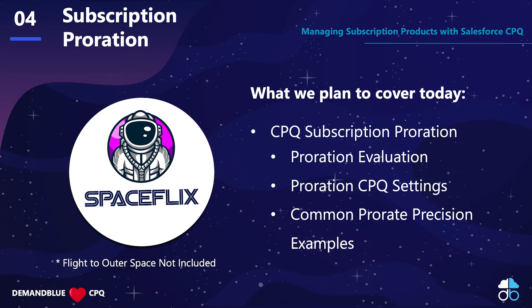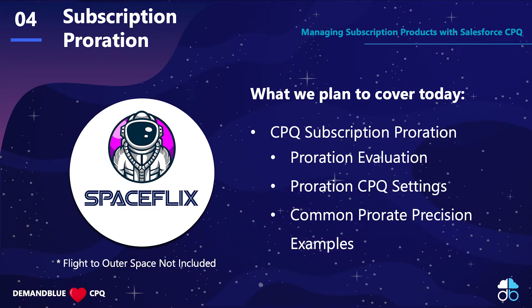Today here are a few of the things we're going to cover. We're going to give an overview of subscription proration within CPQ. We're going to talk about how proration is evaluated at the different record and line levels. We're going to go over the CPQ settings and walk through a few of the common settings and some examples of those settings within CPQ. And as always we're going to use our fictitious SpaceFlix streaming service in outer space.